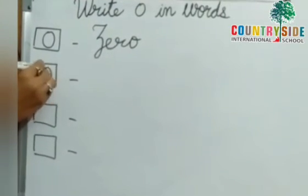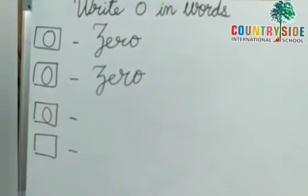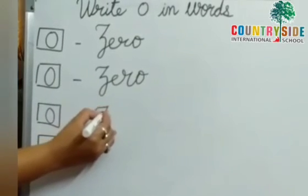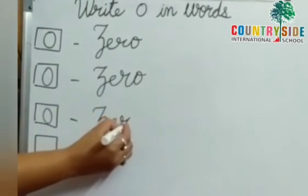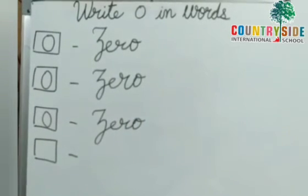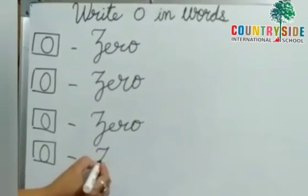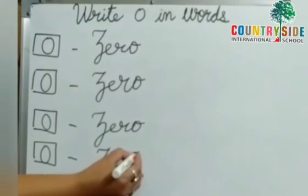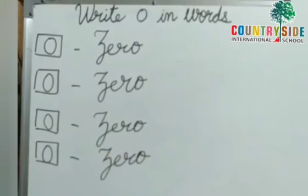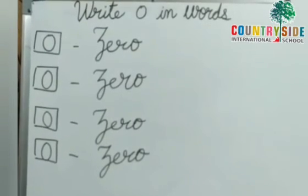One more time, speak with ma'am. Z-E-R-O. Zero. Next. Zero. Capital Z-E-R-O. Zero. All are writing with ma'am? Good. Zero. Capital Z-E-R-O. Zero. In the same way, you have to complete your page number 60.